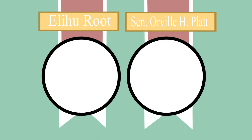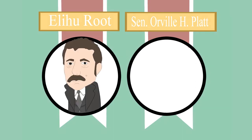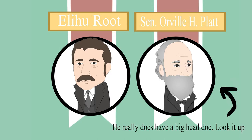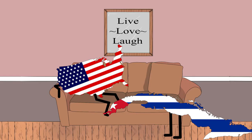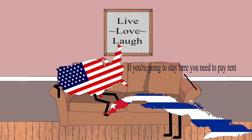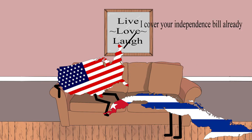Formulated by Secretary of War Eli Root and presented to the Senate by Senator Orville H. Platt. In 1898, the U.S. was occupying Cuba as part of its involvement in maintaining the island's newfound independence.